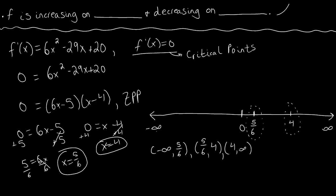We can pick any number in each interval. For simplicity, I'll pick 0 for the interval negative infinity to 5/6, 1 for the interval 5/6 to 4, and 5 for the interval 4 to infinity. We're not here to tax our brains on complicated numbers, so let's keep it simple. We're going to find f prime of 0, f prime of 1, and f prime of 5.